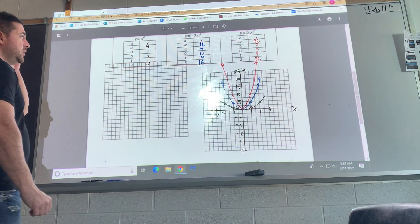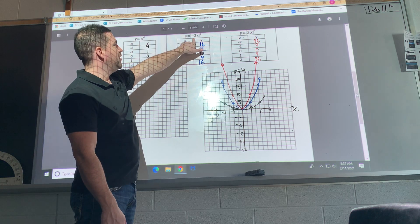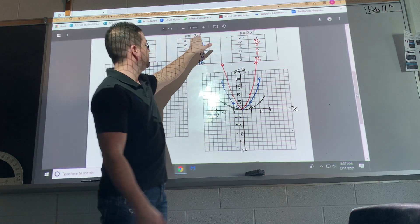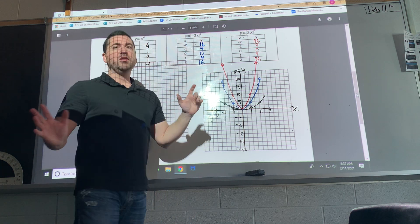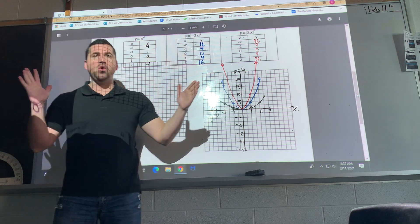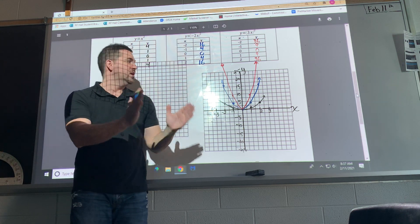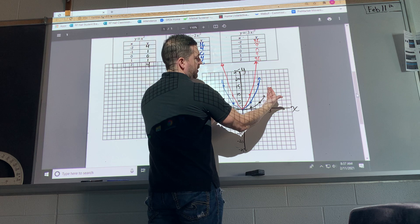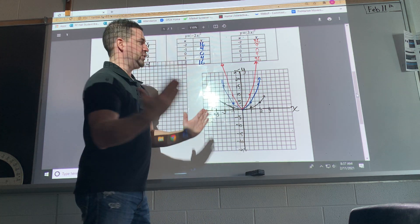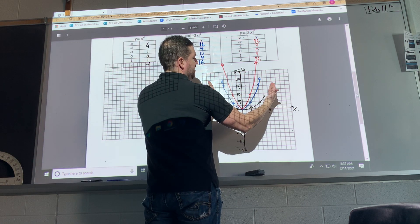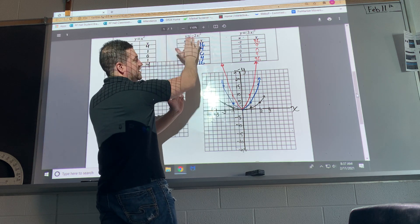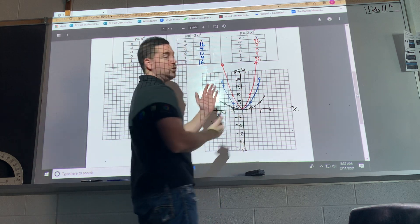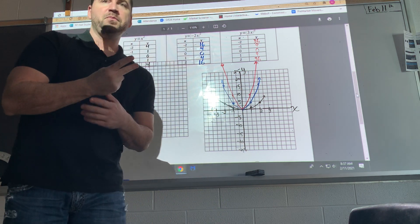So as you can see, our k value, because it's inside of the brackets next to x, if it's larger than 1, it's a horizontal compression. So if you think about it, the black one was our parent function, and now we're compressing it. So now we compress it by a factor of 2, but it's the opposite. So it's k over 2, which is a half.